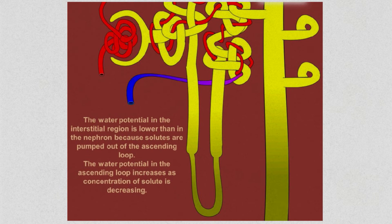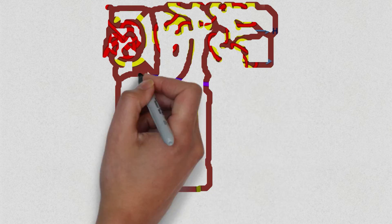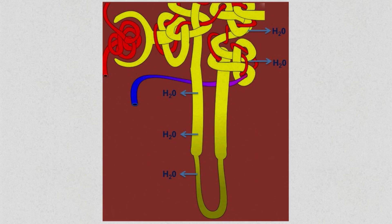The ascending limb continues to pump sodium ions out, which further increases the water potential in the ascending limb. Now at the distal convoluted tubule, at the top of the ascending loop of Henle, the water potential in the nephron is very high. Water moves out of the distal convoluted tubule into the interstitial region. From the interstitial region the water enters the capillaries, which means it is reabsorbed. The water that remains in the distal convoluted tubule passes into the collecting duct, and from the collecting duct the water will pass into the ureter.